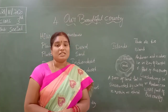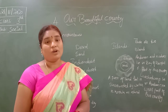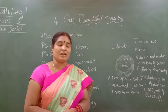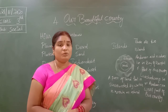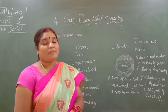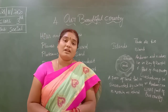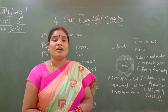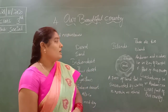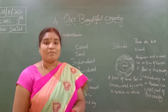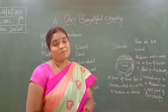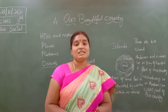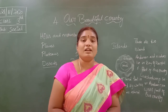A piece of land surrounded by water is known as an island. There are two islands in our country: Andaman and Nicobar, which lies in the Bay of Bengal in the east part of the country, and Lakshadweep, which lies in the Arabian Sea in the west part of our country.